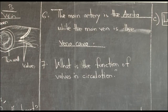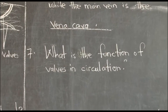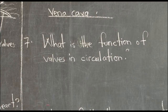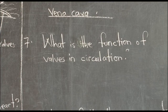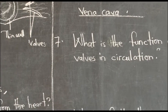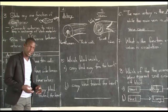Number seven asks: what is the function of valves in blood circulation? We have looked at this when talking about veins — veins have got valves. The function of valves during blood circulation — you can answer this number. Within the heart there are different valves: the tricuspid valve, the bicuspid valve, and the semilunar valves. So please consider why those valves are there and how they are important in the human heart.